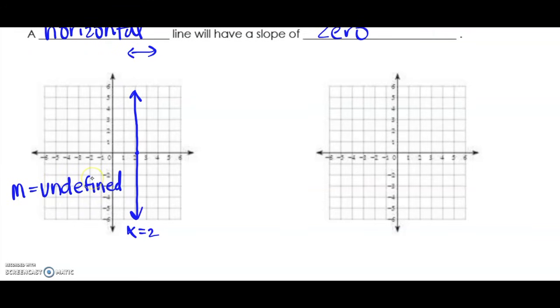Horizontal lines are going to cross the y-axis at a certain value. Here it's crossing at negative two, so the equation of that line would be y equals negative two, but the slope is zero.